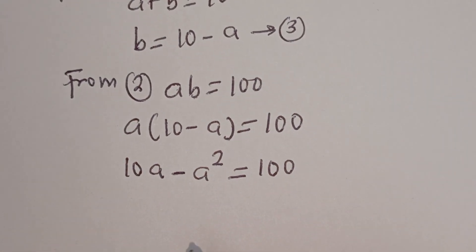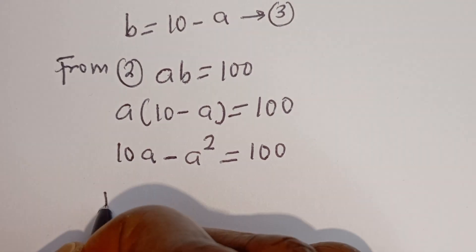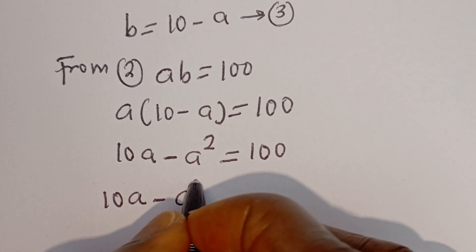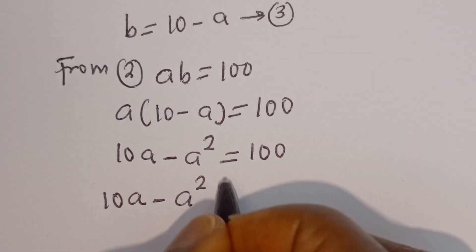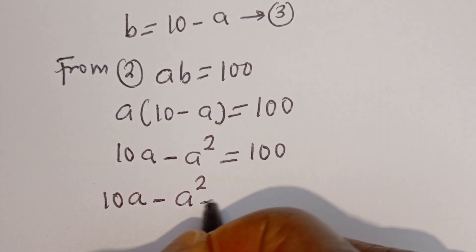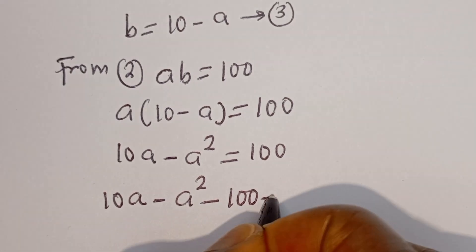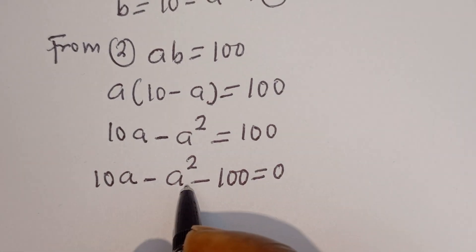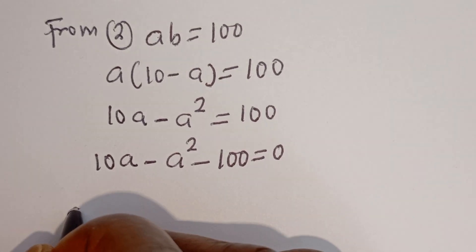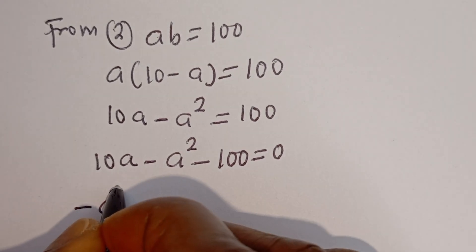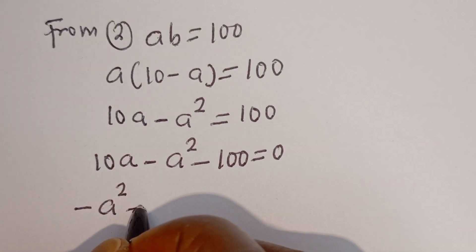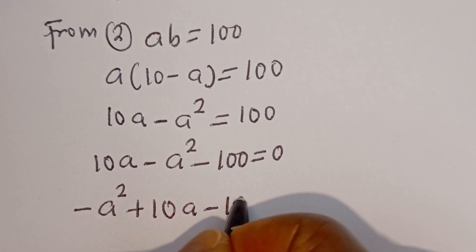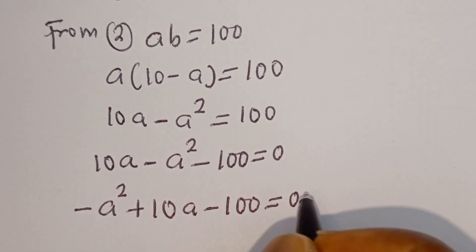We have 10a minus a squared is equal to 100. If you bring 100 to this side, it becomes minus 100, equal to 0. Then we can put this in standard form: minus a squared plus 10a minus 100 is equal to 0.